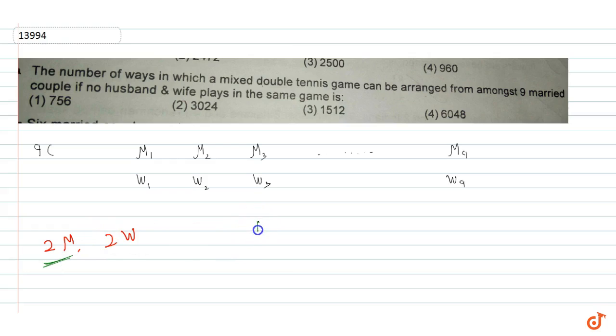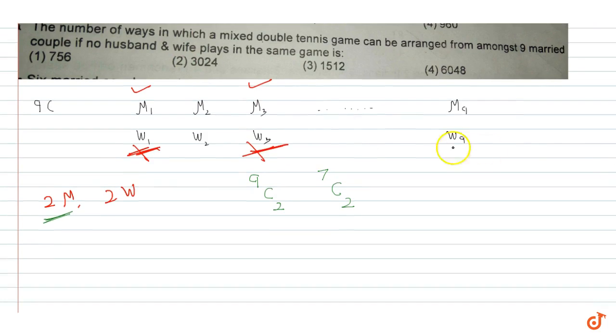So from nine men, we choose any two men. Now, which women can play? Woman two, woman four, woman five, woman six, seven, eight, nine - these can play. That's seven women, because we exclude the wives of the two men chosen.